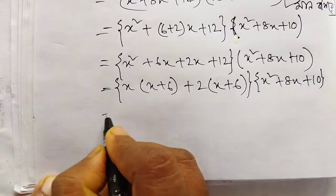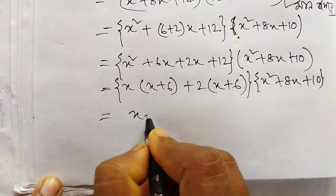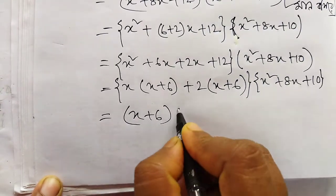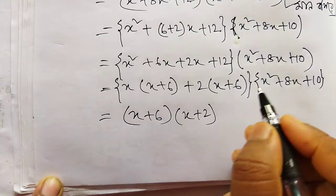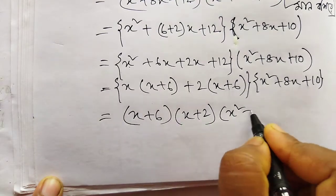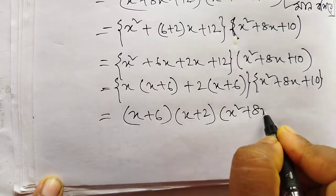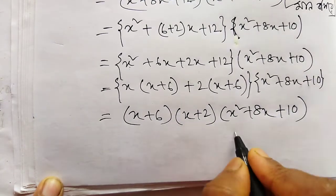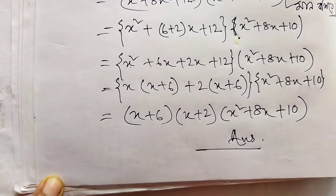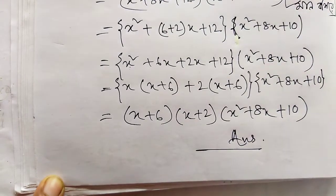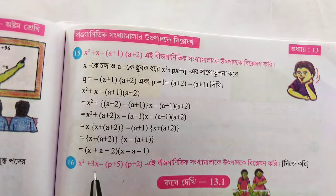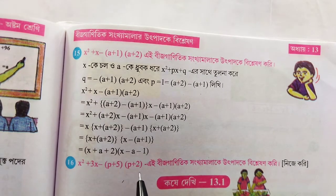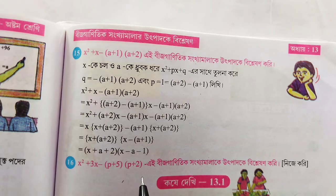Now I have to take a look at x plus 6, I have to take a look at x plus 2, and I have to take a look at x squared plus 8x plus 10. This is the number of x squared plus 8x plus 10. This is the number of x squared plus 3x minus p plus 5 into p plus 2.